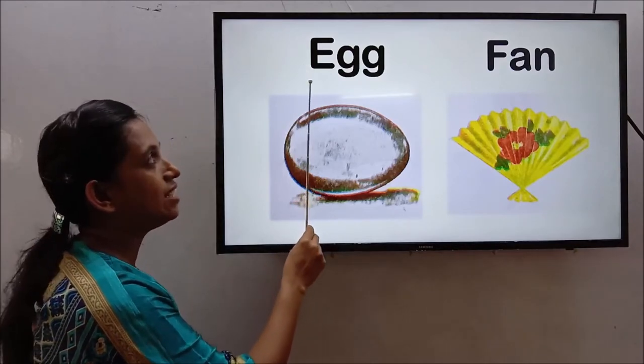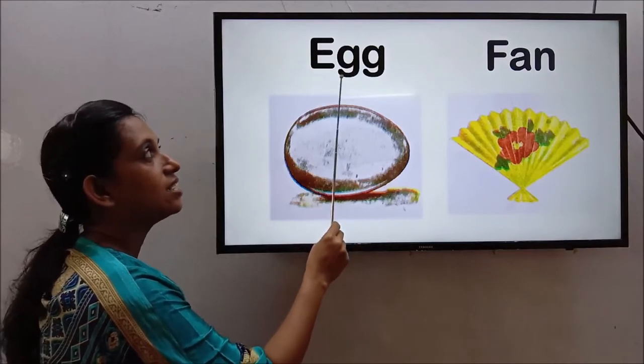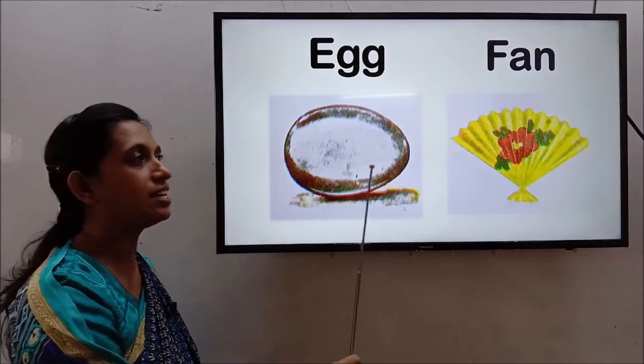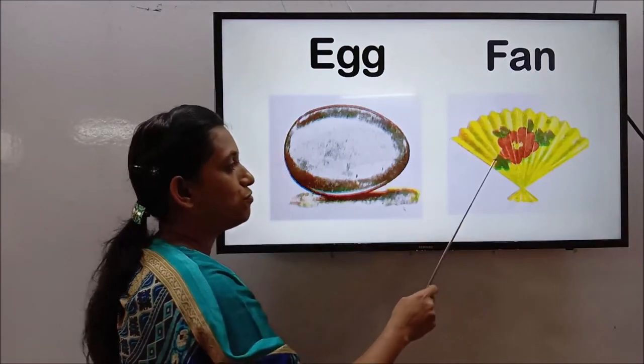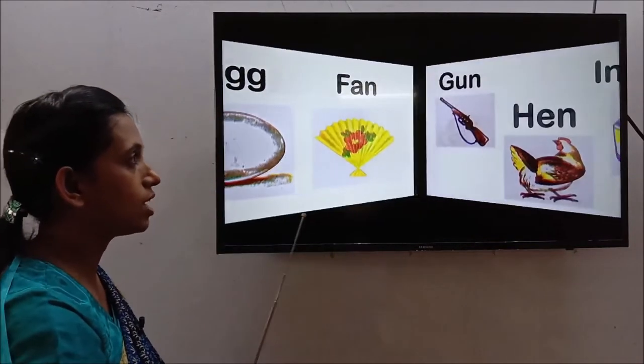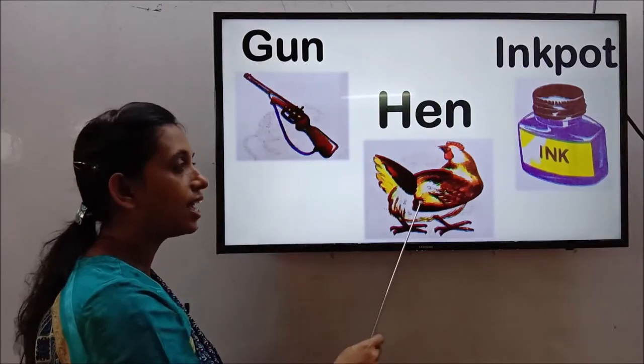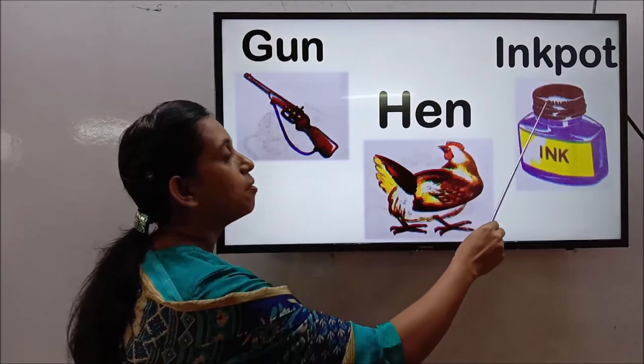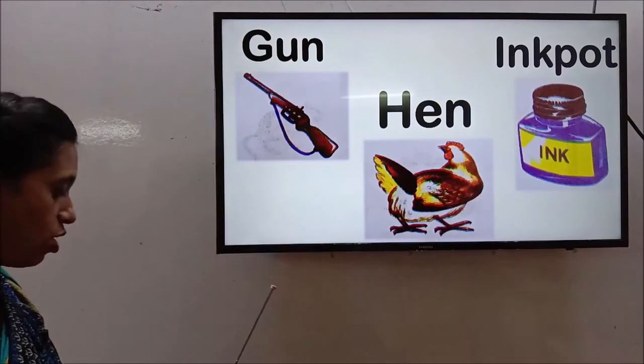We have to eat egg every day. So, let's read E-G-G, egg. E-G-G, egg. Egg, egg, egg means dim. Next one, F-A-N, fan. Fan, fan means pakha. G-U-N, gun. H-E-N, hen. H-E-N, hen. Ink pot, I-N-K, ink. P-O-T, pot. Ink pot.